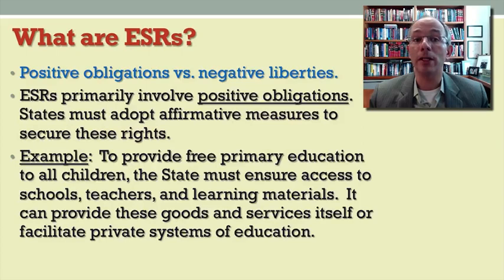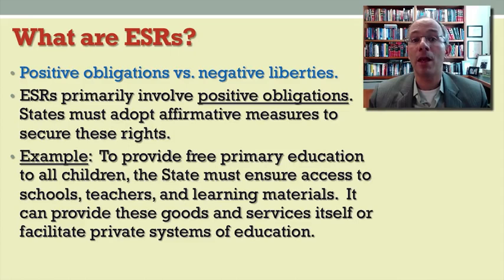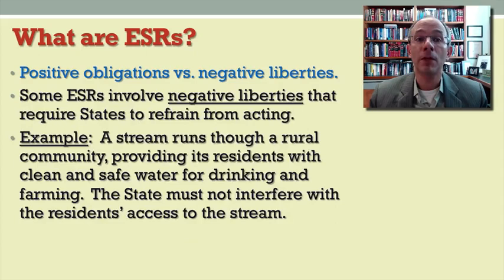As these examples suggest, economic and social rights are primarily positive obligations — that is, states have to adopt some affirmative measure to secure these rights. For example, the obligation to provide free primary education to all children requires states to ensure that children have access to schools, teachers, learning materials, etc. The state can do this in a number of ways: it can provide such education and materials itself, or it can facilitate private systems of education.